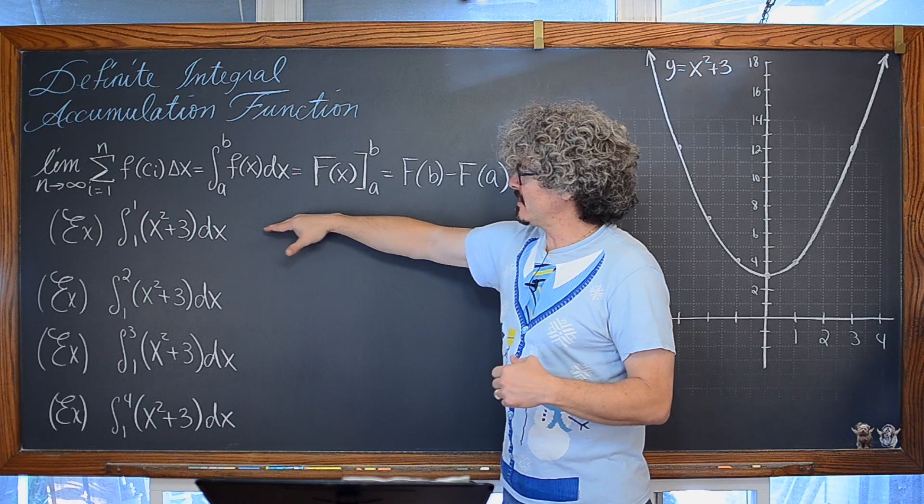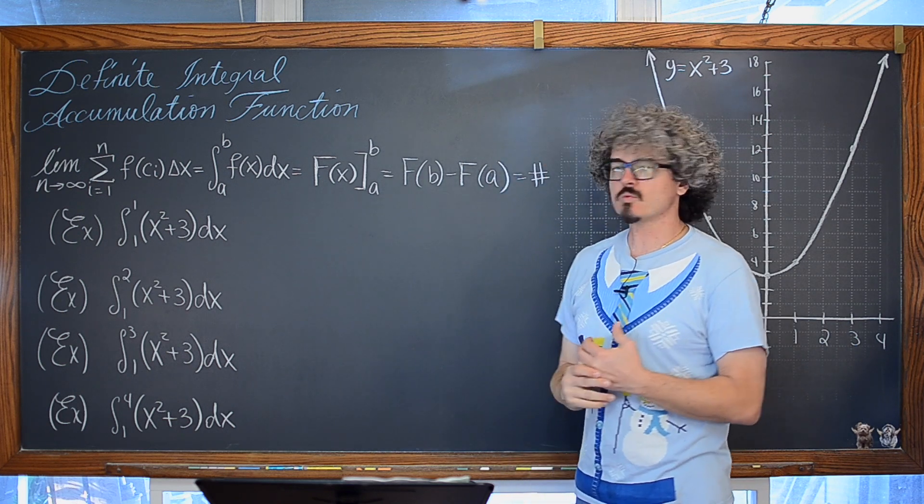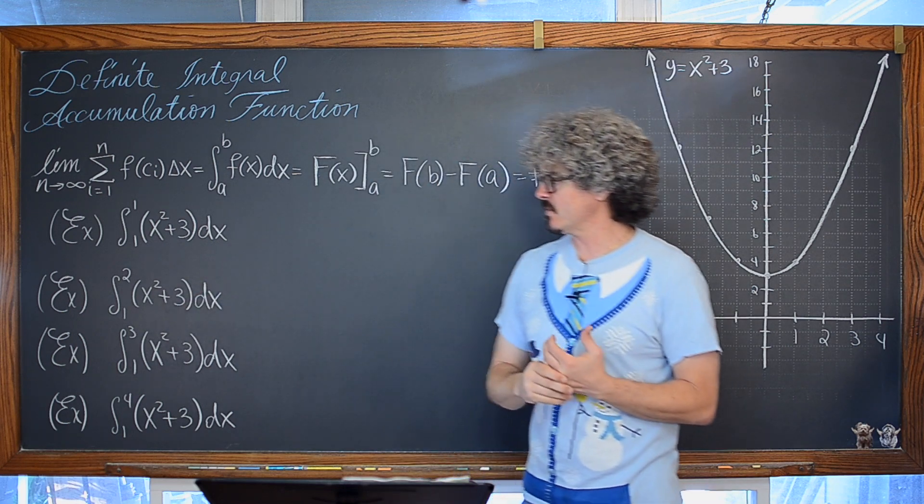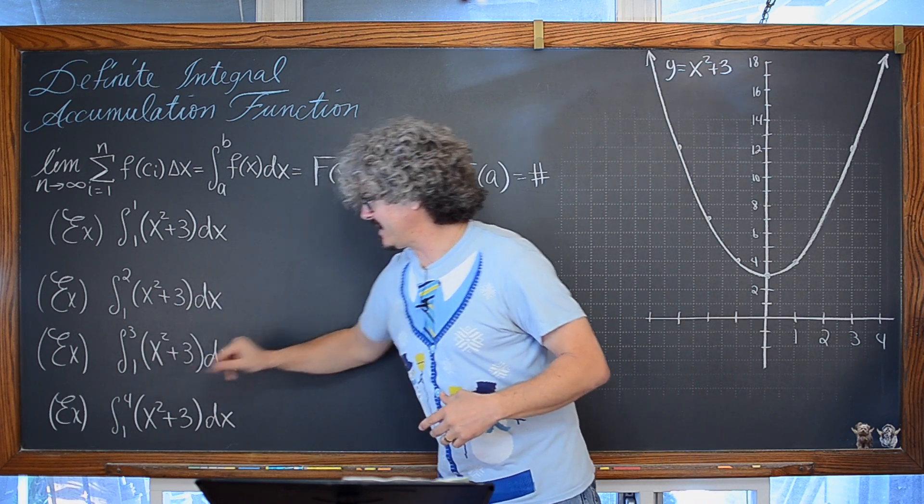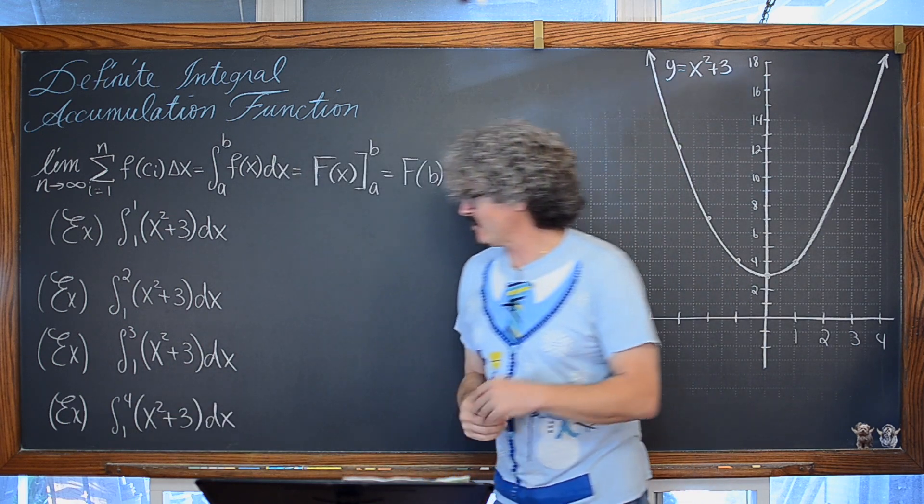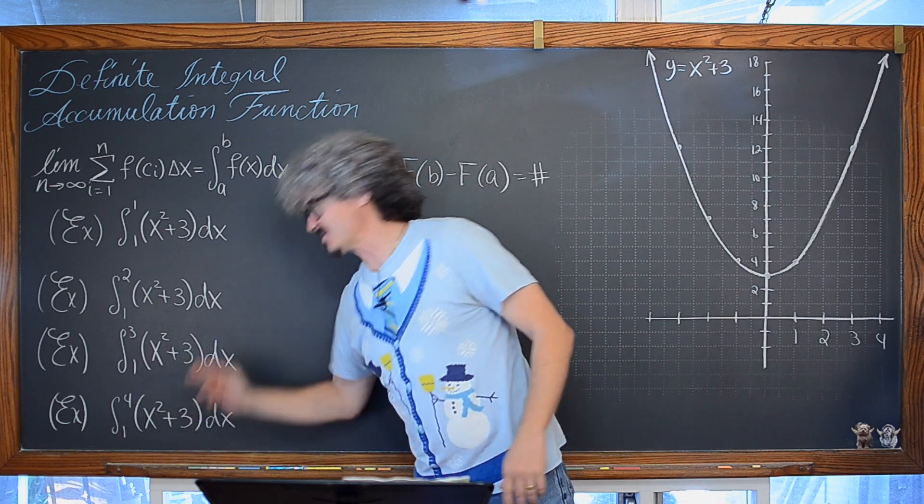We are going to focus though not on word problems not on applications just with the geometry of what's going on here and talk about this idea of an accumulation function. We are going to evaluate the definite integrals from one to one of x squared plus 3 dx, the integral from one to two of x squared plus 3 dx, the integral from one to three of x squared plus 3 dx, and then the integral from one to four of x squared plus 3 dx.